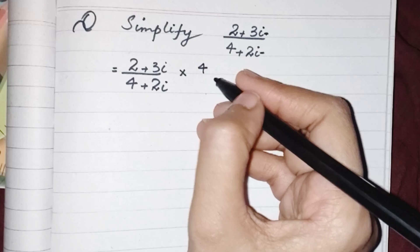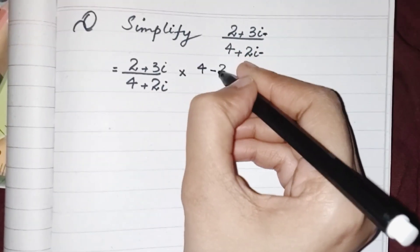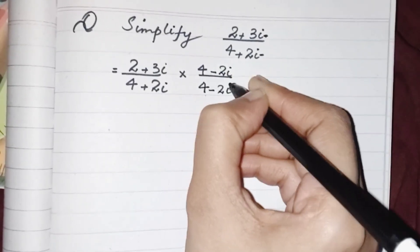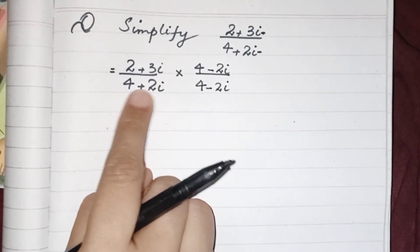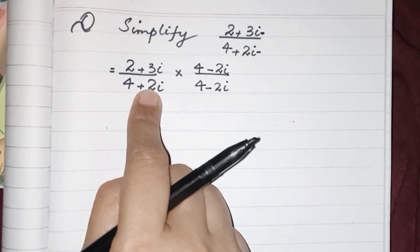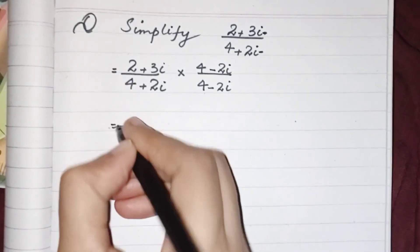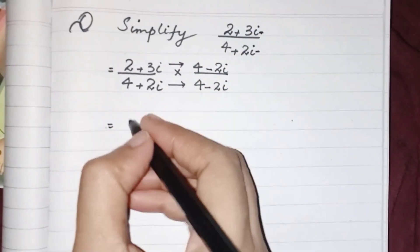So we have to rationalize by multiplying and dividing with its conjugate. Now what's the conjugate of this one? Whatever the number, the imaginary part having the opposite sign is its conjugate. So over here we have an addition sign along with 2i. When we write the conjugate of this, we can place a sign of subtraction.